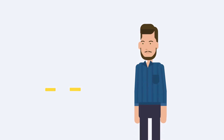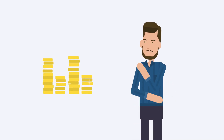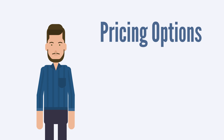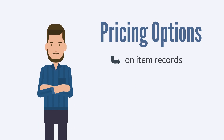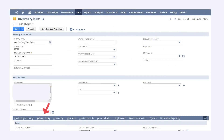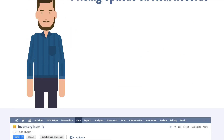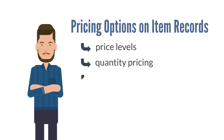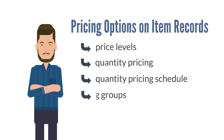How well do you understand the pricing options in NetSuite? We're going to break down the pricing options into two categories: pricing options on item records and pricing options on customer records. First, let's look at the pricing options available on item records. All of these options can be found under the Sales/Pricing tab of an item record. We're going to look at five different features: price levels, quantity pricing, quantity pricing schedules, pricing groups, and multi-currency pricing.